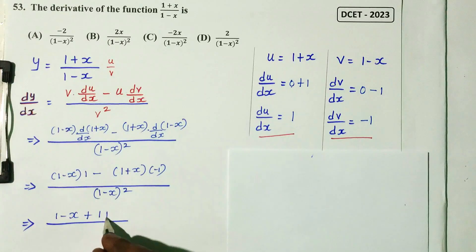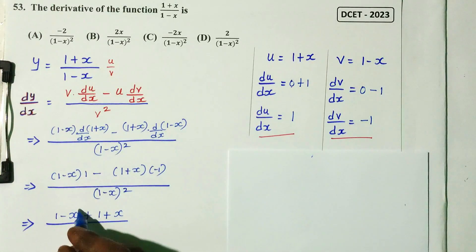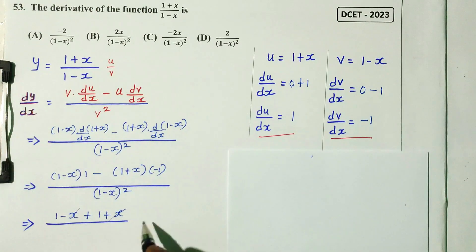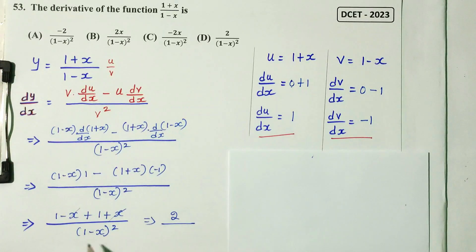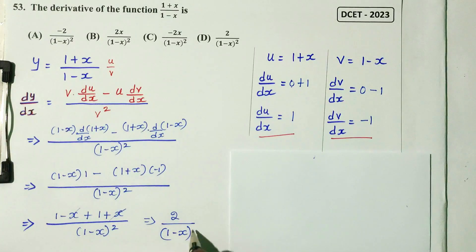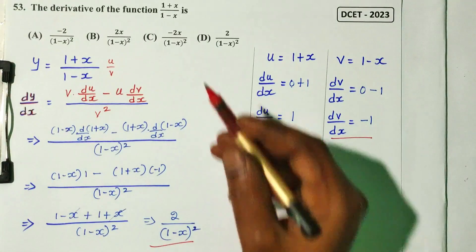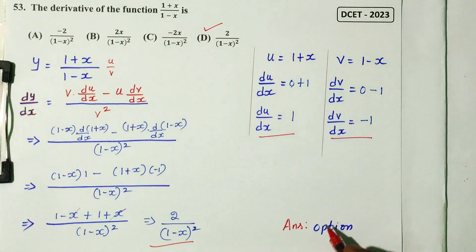Simplifying the numerator: minus x and plus x cancel out. We get 1 plus 1 equals 2. So the derivative is 2 divided by (1 minus x) squared. Option D is the right answer.